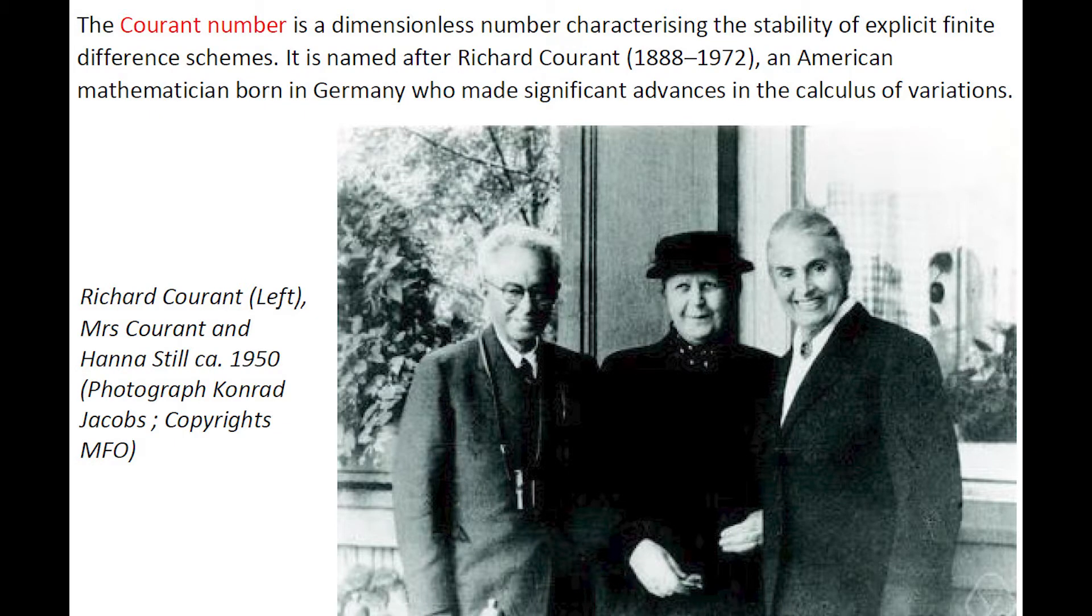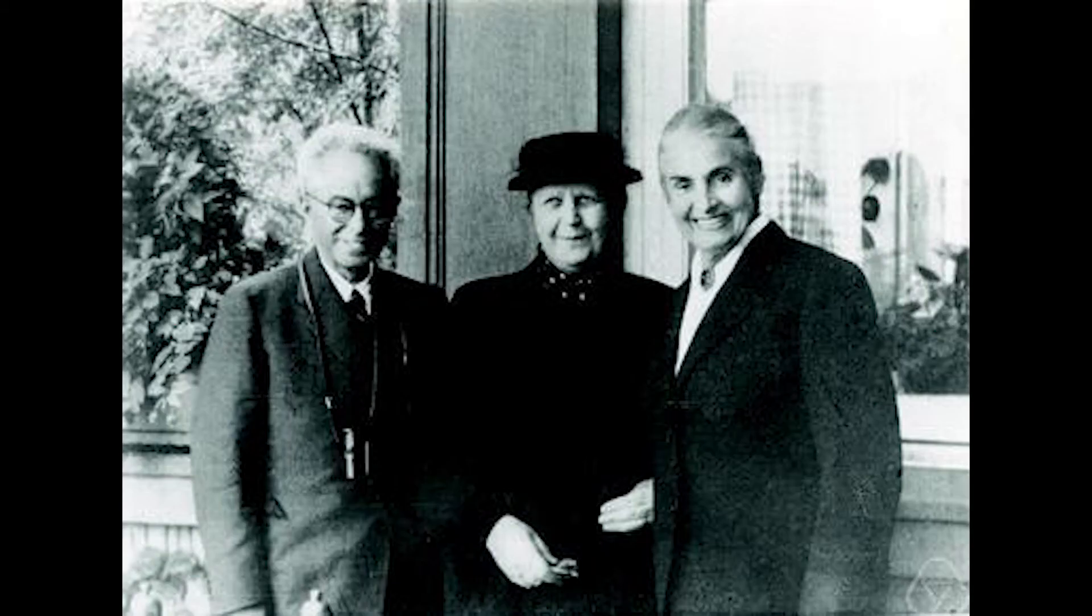The Courant number is a dimensionless number characterizing the stability of explicit finite difference schemes. It is named after Richard Courant, an American mathematician born in Germany, who made significant advances in the calculus of variations. This photograph shows Richard Courant on the left.